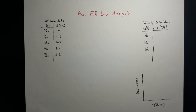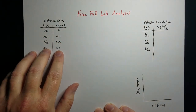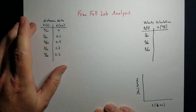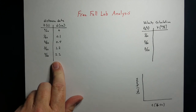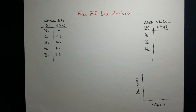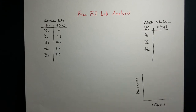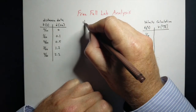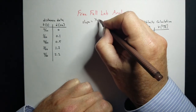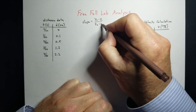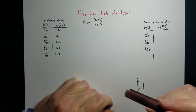Data analysis for the free fall lab. You should have already gotten your distance data from measuring the distance from the first dot to all the others. This is simulated data we're going to use to show how to get the velocity calculations and eventually the acceleration due to gravity. We're going to use line segments along with the slope formula — y2 minus y1 over x2 minus x1 — to figure out the velocity for each point.